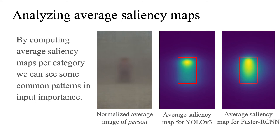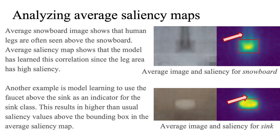To go from individual saliency maps to more general explanations, we computed average saliency for different categories. This allowed us to find some common patterns in the data and model behavior. As an example, you can see that both YOLO and Faster RCNN models on average pay more attention to the upper body when detecting a person. Saliency maps also showed us that the model has learned to use human legs and faucets to detect snowboard and sink respectively.